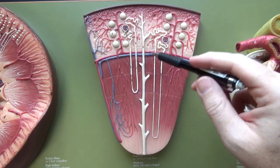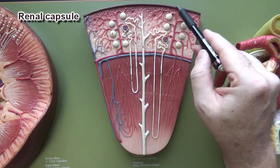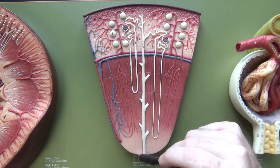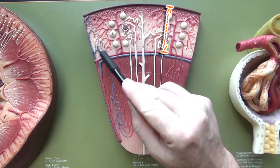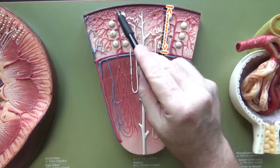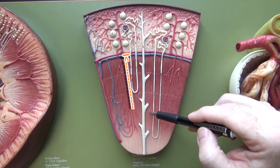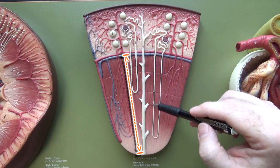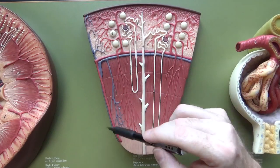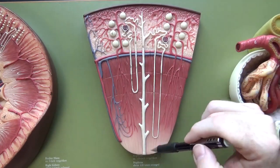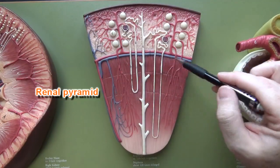What we're looking at here is a lobe of the kidney where this out here is the renal capsule. Down here this structure is the renal papilla. This region right in here — all of this region — is the renal cortex. Down here this region is the renal medulla, but if I wanted to use this area to indicate a specific structure, that specific structure I'm outlining here is a renal pyramid.